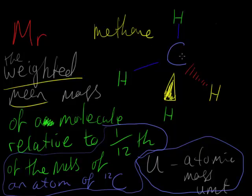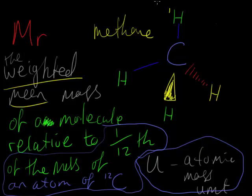This molecule might contain different isotopes of the elements it's made up of. For example, this carbon here could be carbon-12, it could be carbon-13, it could be carbon-14 — different isotopes of carbon. And these hydrogens: this one could be hydrogen-1, this one hydrogen-1, and this one could be hydrogen-2.